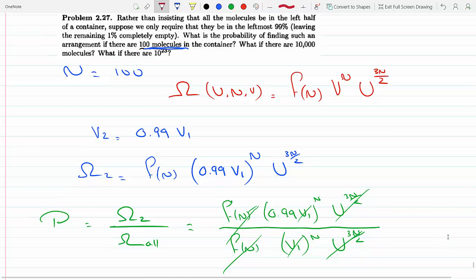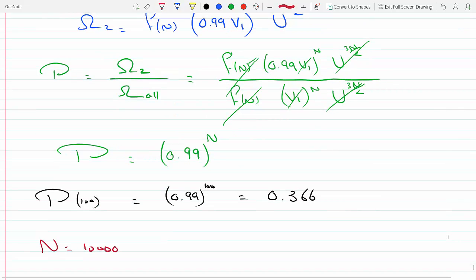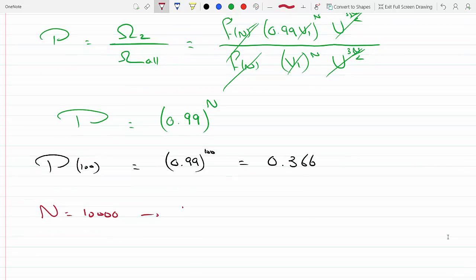And if N is 10,000 - was it 10,000 the second one? - okay, so if it's 10,000, then we get P of 10,000 to be 0.99 to the 10,000.